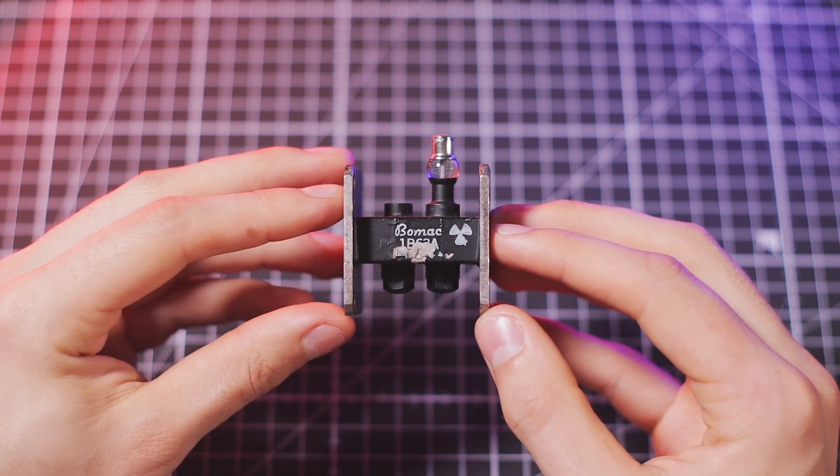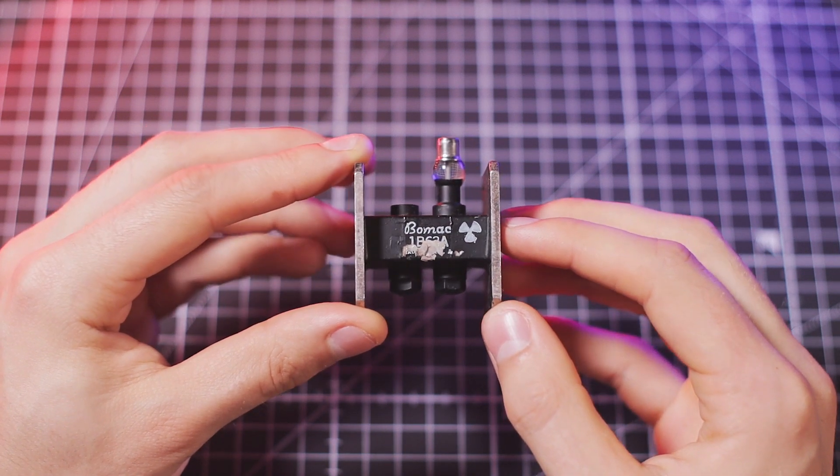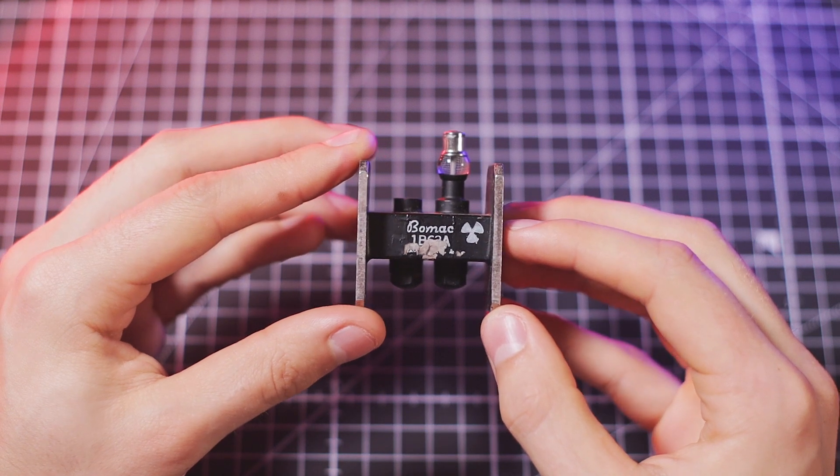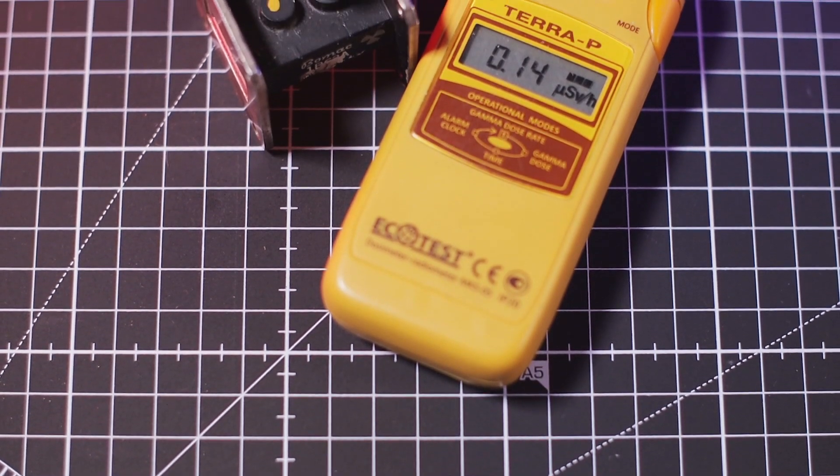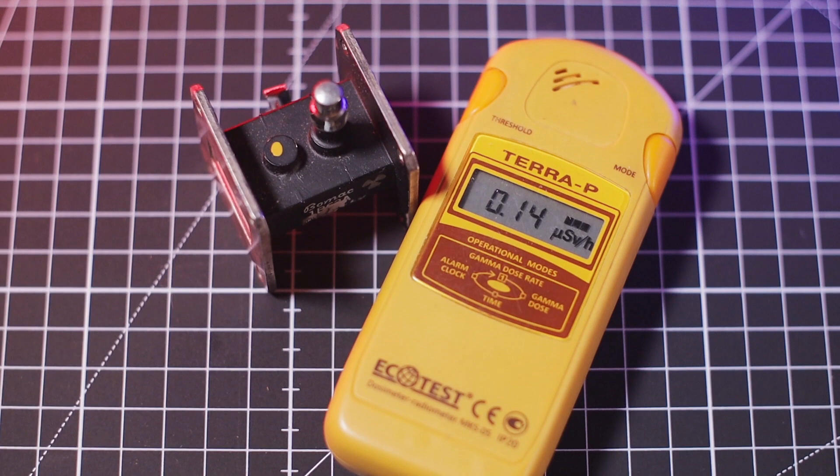My sample of Cobalt-60 is an old BOMAC-1B63A tube which was originally used in radars and contained less than one microcurie of Cobalt-60. These tubes were manufactured in the late 20th century, and sadly, there's no detectable activity left since almost all of the Cobalt-60 has decayed.